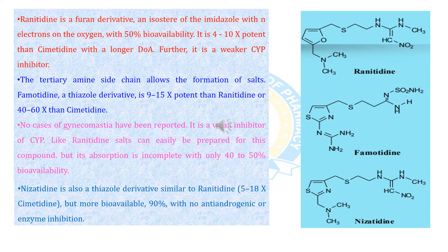Famotidine, a thiazole derivative, is 9 to 15 times more potent than ranitidine and 40 to 60 times more potent than cimetidine. No cases of gynecomastia have been reported, and it is a weak inhibitor of cytochrome P450. Like ranitidine, a salt can easily be prepared, but its absorption is incomplete with 40 to 50 percent bioavailability. Nizatidine is also a thiazole derivative similar to ranitidine but more bioavailable at 90 percent, with no anti-androgenic or enzyme inhibition effects.